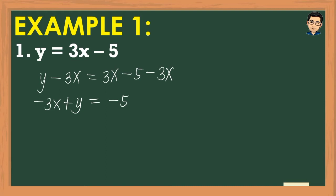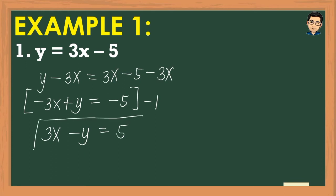We need to make sure the numerical coefficient of x is positive, so we multiply the whole equation by -1. Our final answer is 3x - y = 5. So when we transform y = 3x - 5 into standard form, its equivalent is 3x - y = 5.